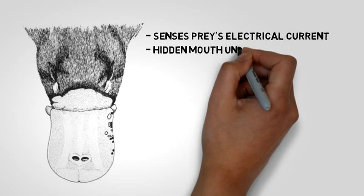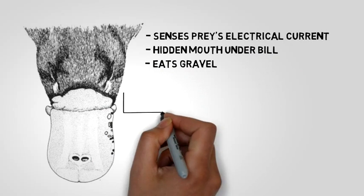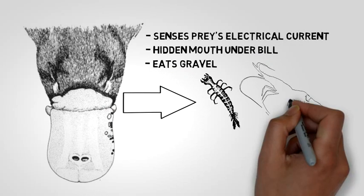Hidden mouth under bill. Eats gravel. Eats insect larvae and freshwater shrimp.